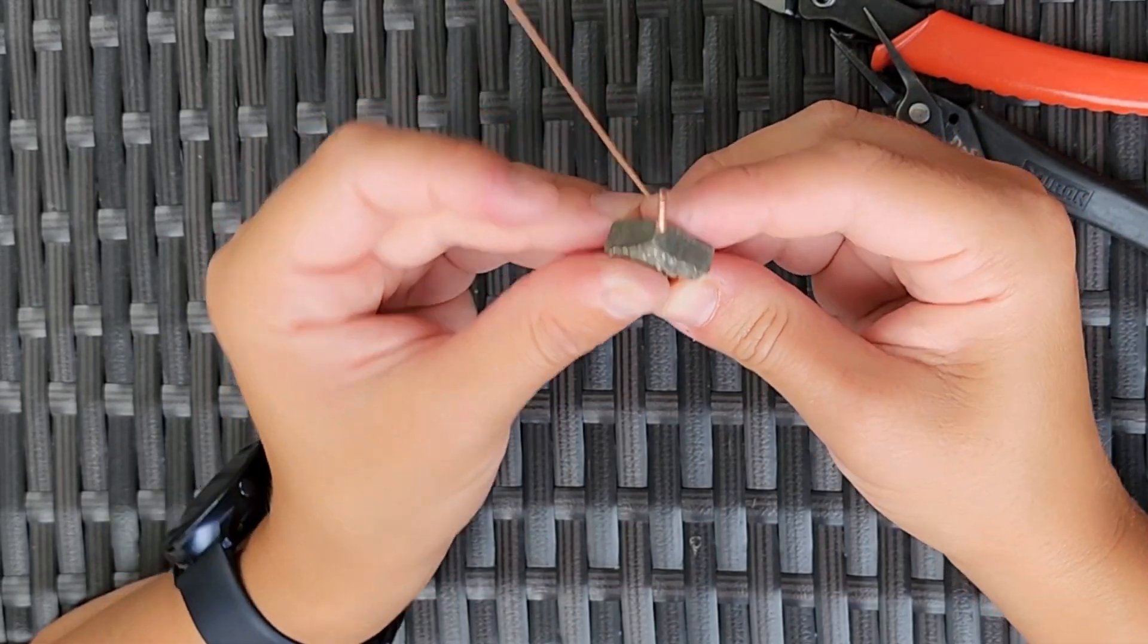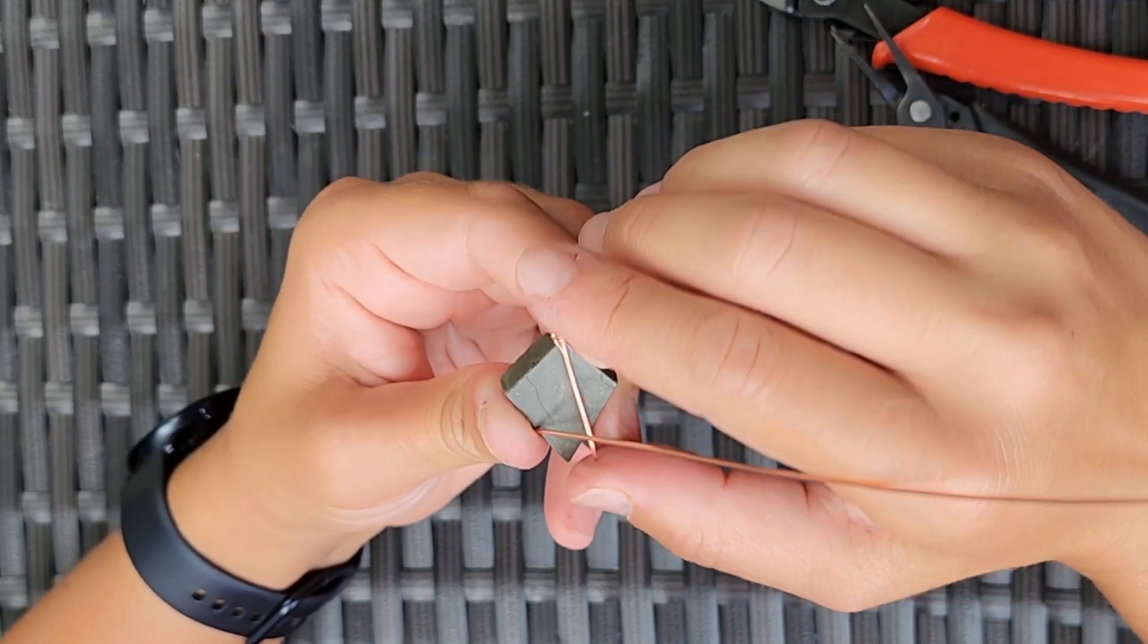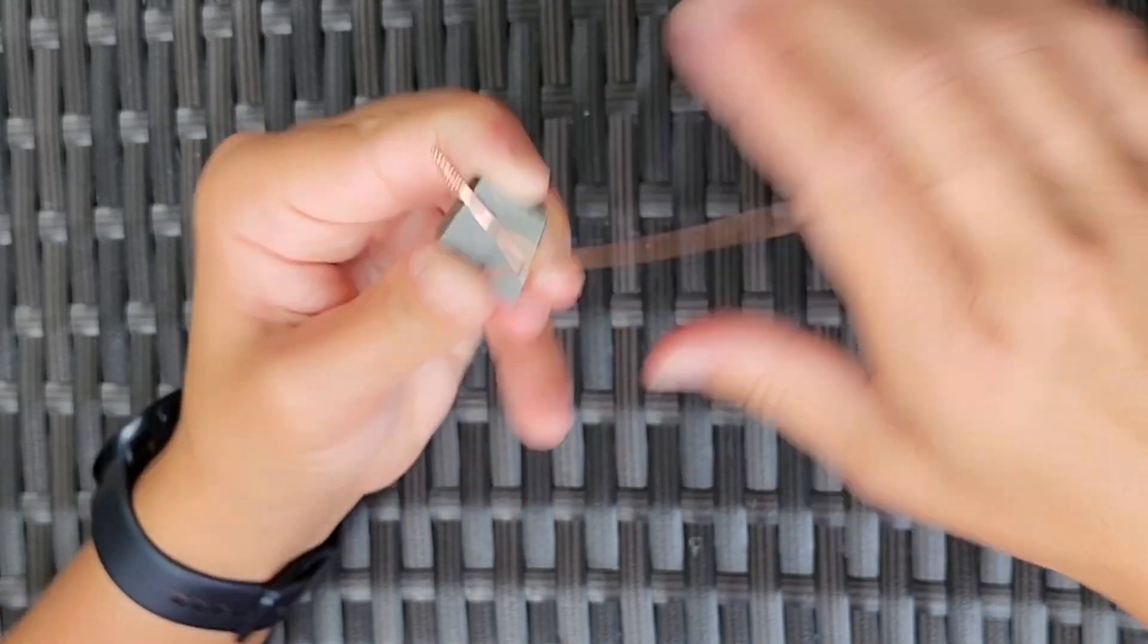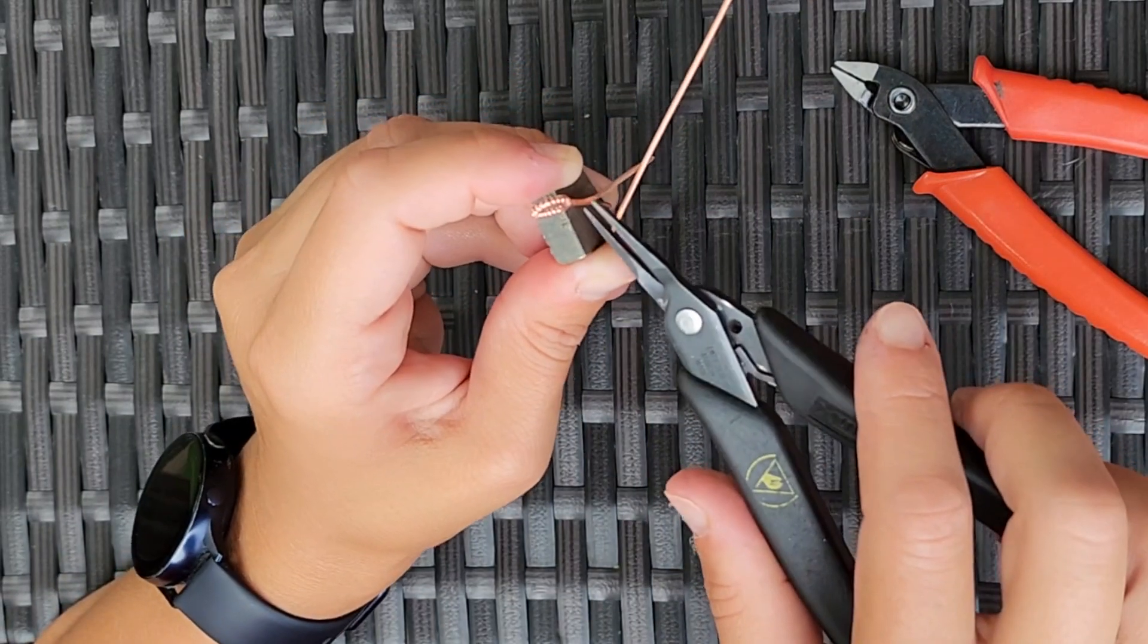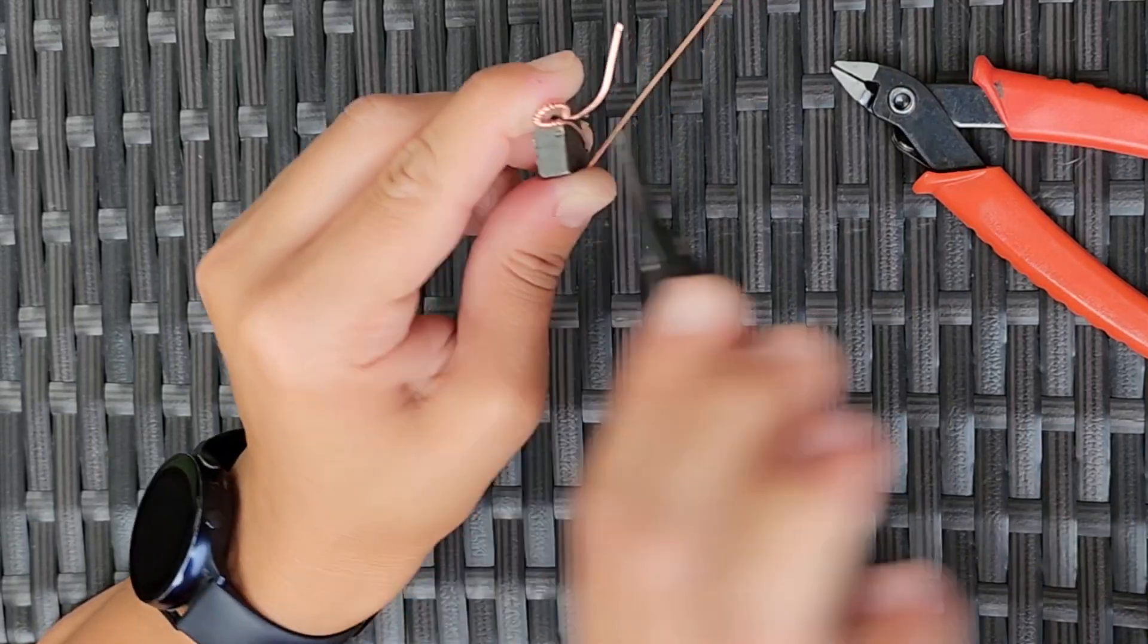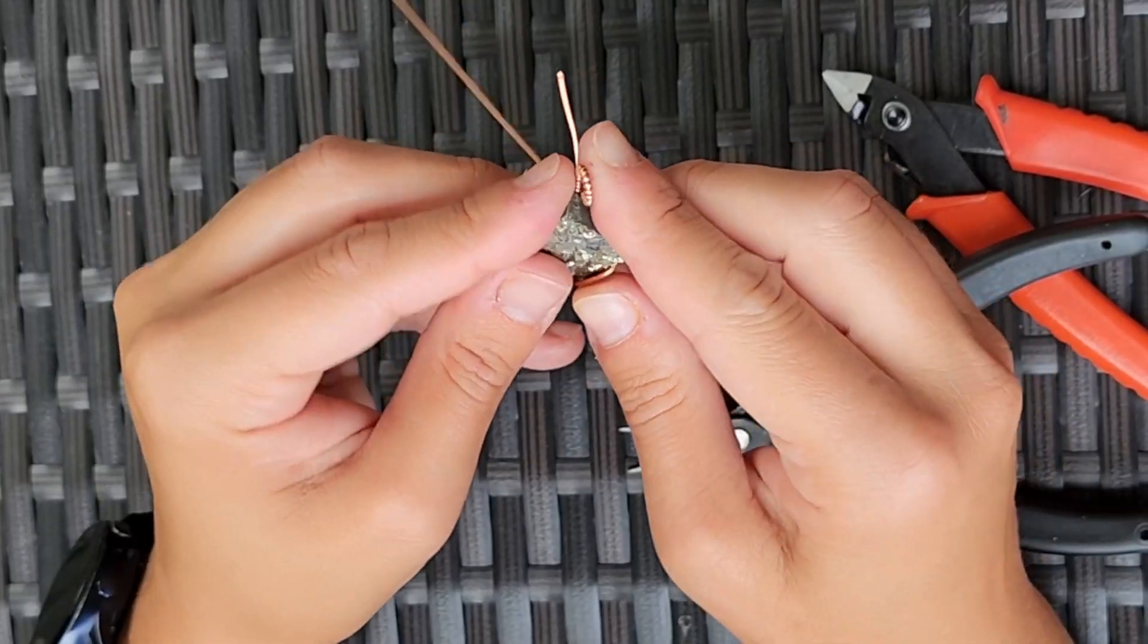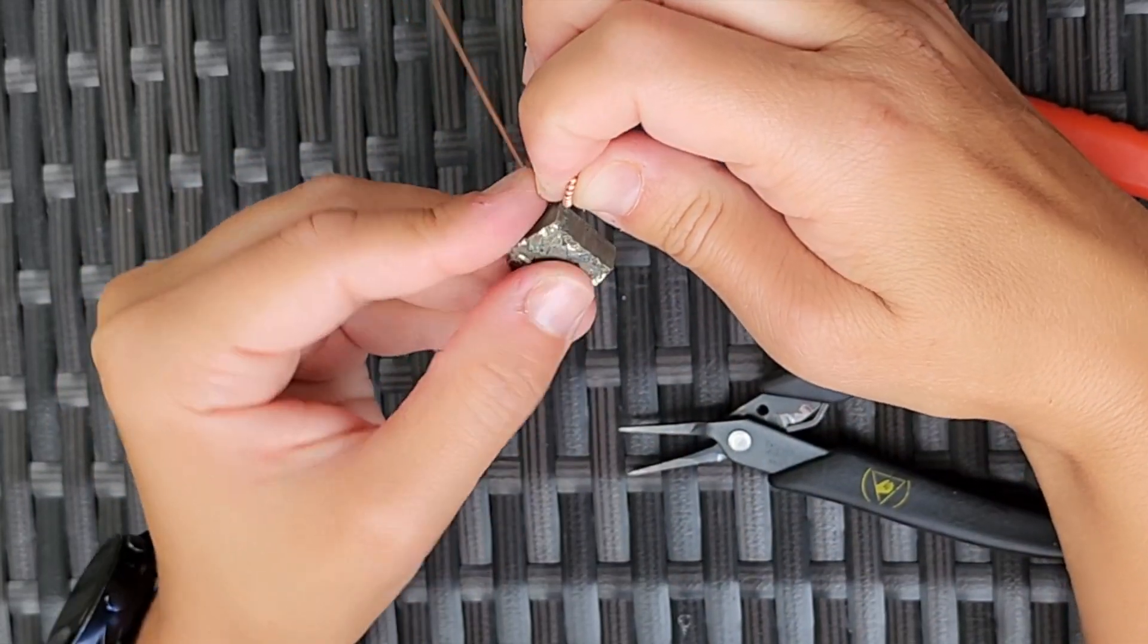One thing you want to check is on the back of the stone you might have some extra wire from when we were wrapping the bail. You want to make sure that doesn't get caught around the wrap, so use your pliers and bend it up and out of the way while we wrap the stone. We will snip that off later, but just get it out of the way for now.